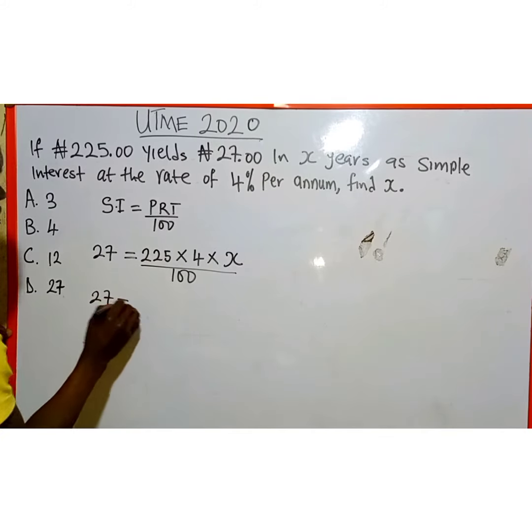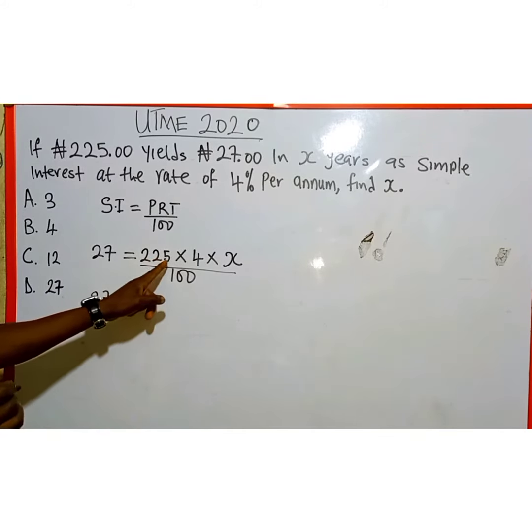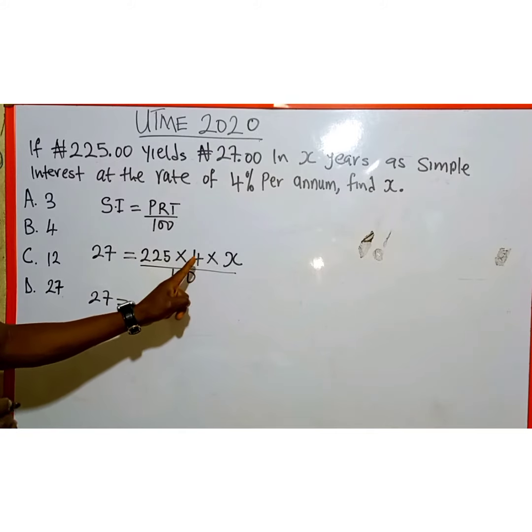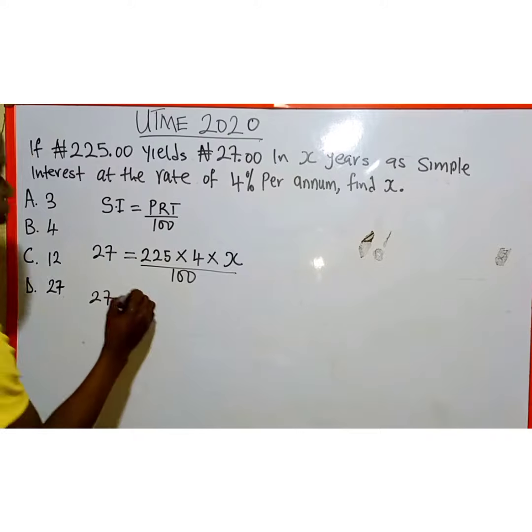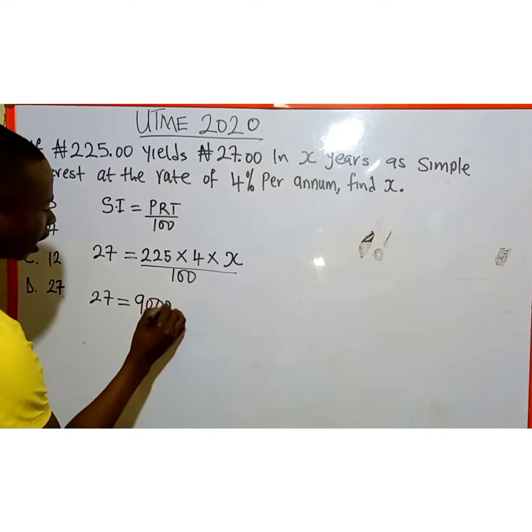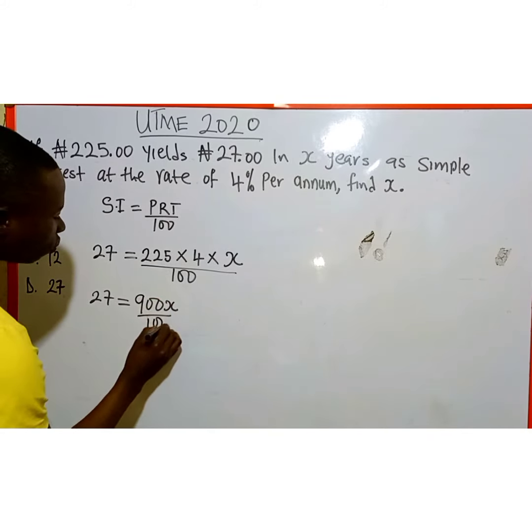We are going to have 27 equals 225 multiplied by 4, which gives us 900. Then 900 multiplied by X gives us 900X, then over 100.